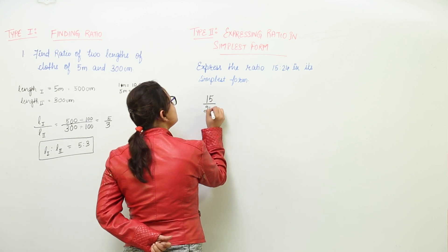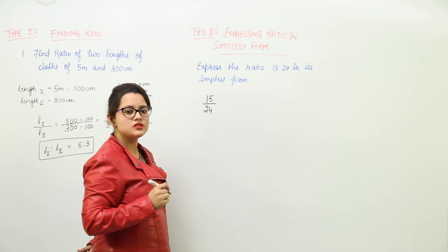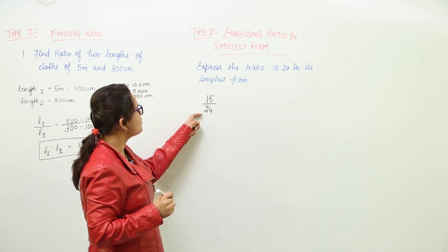15 upon 24. This can be written in the form of a fraction. So I have written it down in the form of a fraction.